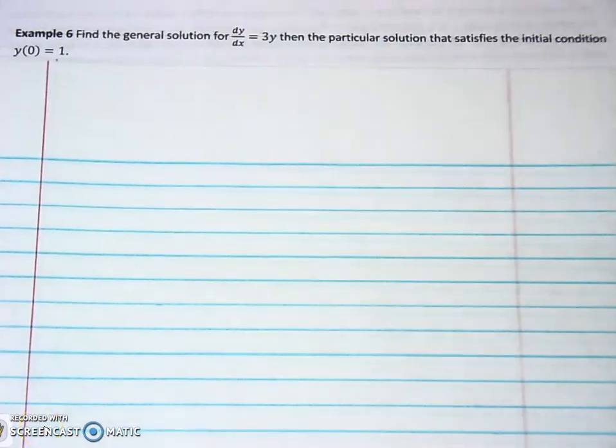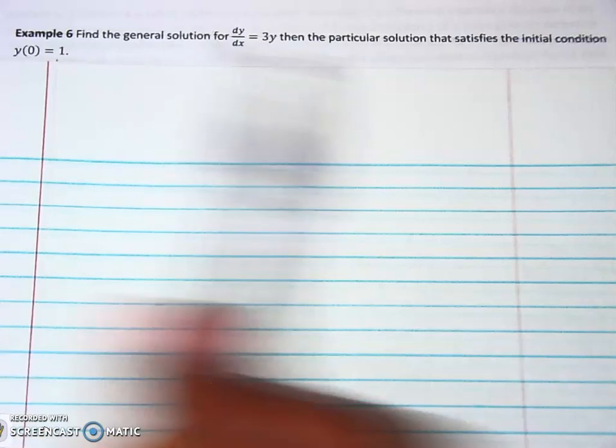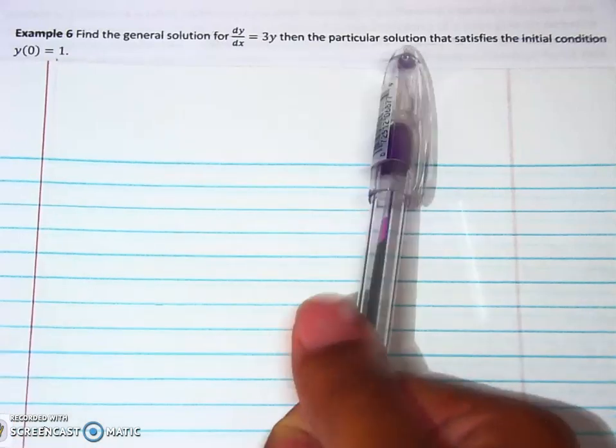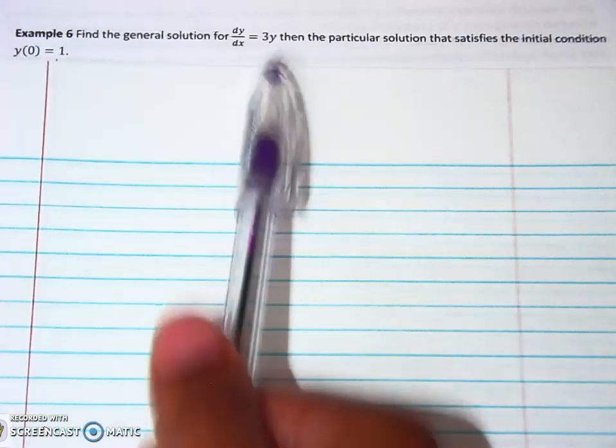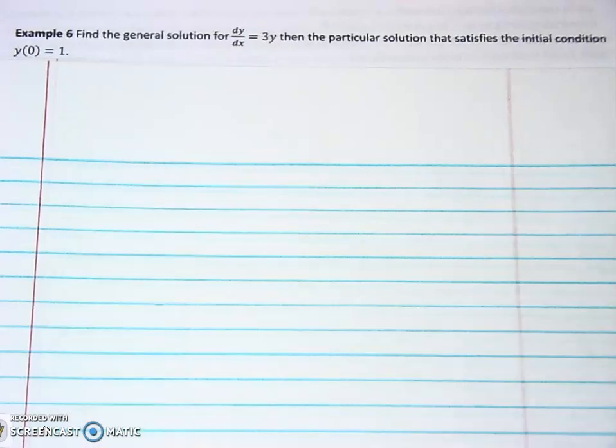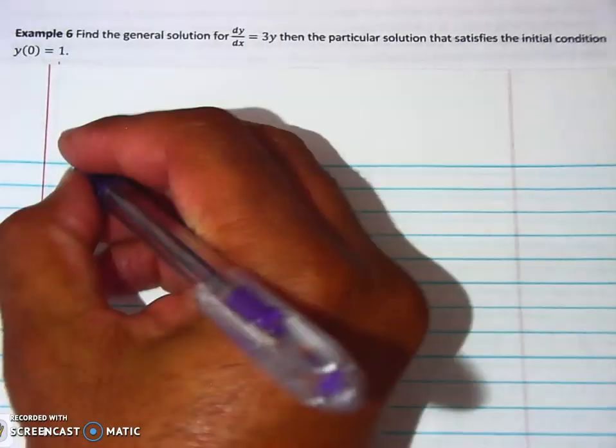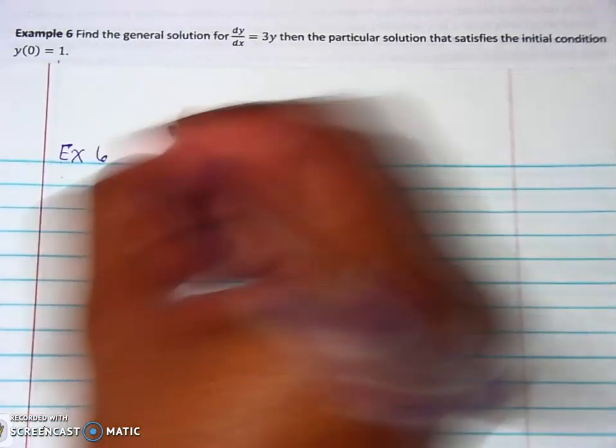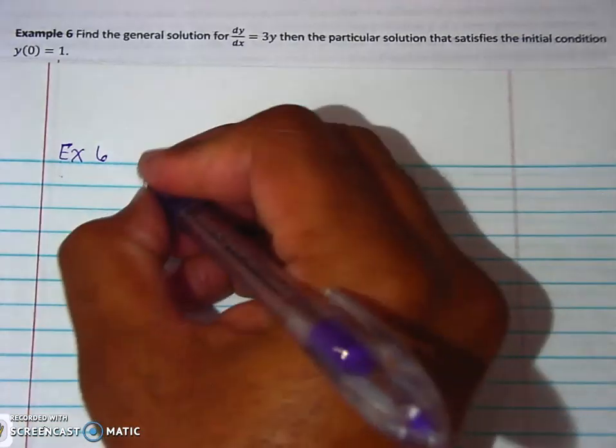Alright, so the last example deals with differential equations. Same process we're still using, but find the general solution and we're going to find a particular solution given a condition. The equations are going to be a little bit different, but it's going to be very simple and easy, exactly what we've been dealing with. So example six, final example.